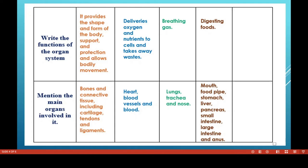The fifth system is the muscular system. Its function is body movement. Muscles are attached to the bones — bones alone cannot move; they must be attached to muscles for us to move our body parts. The organs involved are skeletal muscle, smooth muscle, and cardiac muscle. With the help of these three kinds of muscles, we can move our body organs.